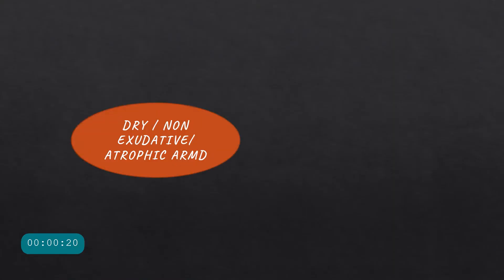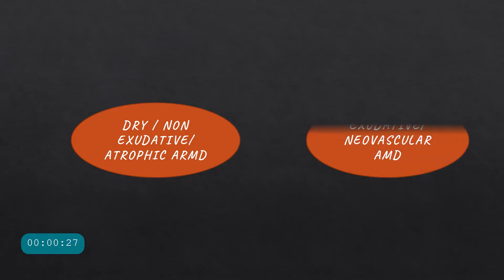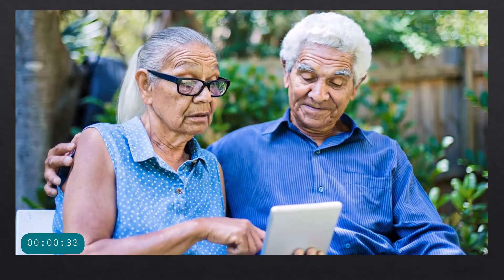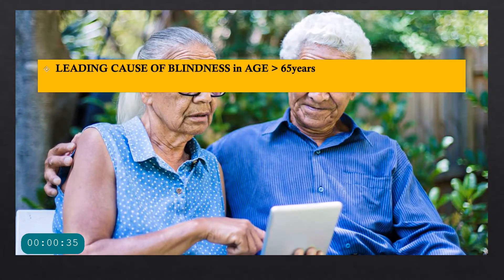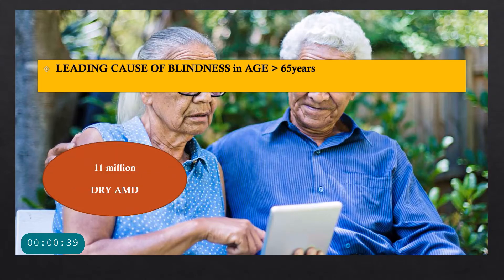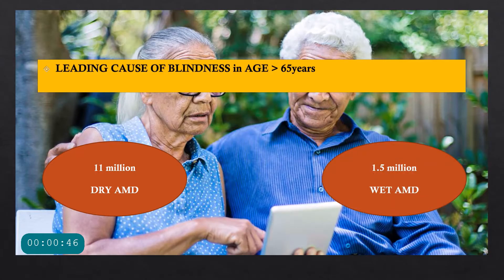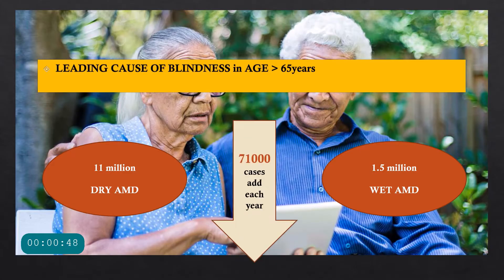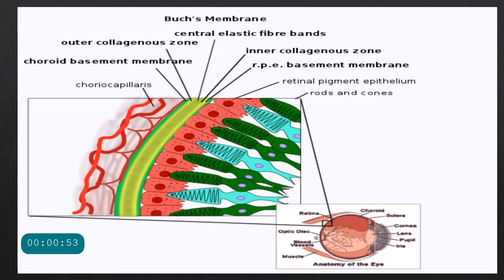Today we are studying the pathophysiology of dry and wet ARMD, that is age-related macular degeneration. The age-related macular degeneration or AMD is of two types: the dry, non-exudative, atrophic ARMD or the wet, exudative or neovascular AMD. AMD is a leading cause of blindness in the age group above 65 years. In America alone, there are about 11 million cases of dry AMD and 1.5 million cases of wet AMD, and about 71,000 cases are added every year.